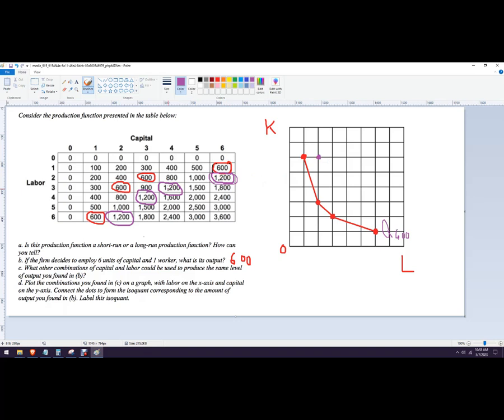Four units of capital - one, two, three, four - and three units of labor right here. Three and four - so one, two, three, one, two, three, four. You can label these if you want; I'm just counting them.